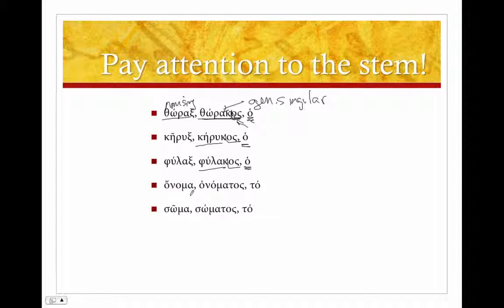And the same is going to follow for the neuters. So onoma, onomatos, to, it's neuter. We knock off our -os, our stem is onomat. You'll notice the stem is actually longer than the nominative singular onoma, name.